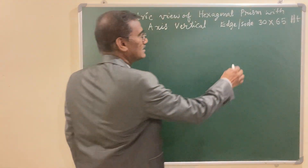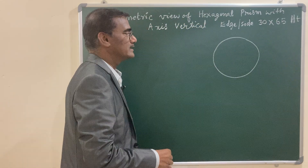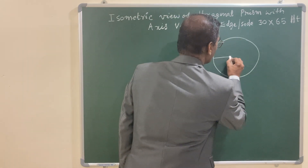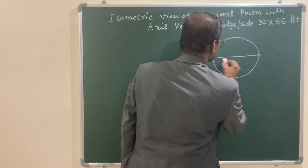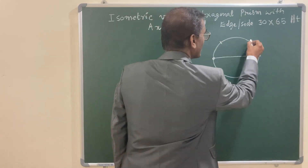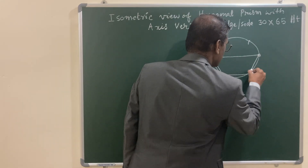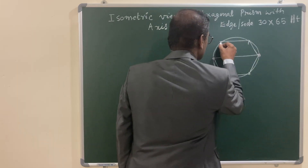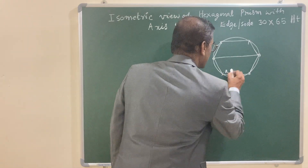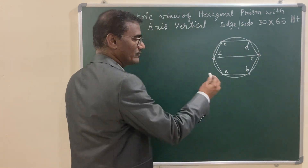Draw a circle with the given radius of 30 mm. To keep the edge horizontal, draw a horizontal diameter. Using the two endpoints as centers with the same radius, mark points above and below, then join them in proper sequence to get the required hexagon with the edge horizontal. Label the vertices a, b, c, d, e, and f.